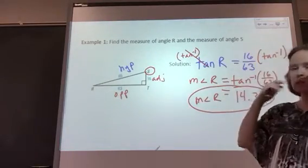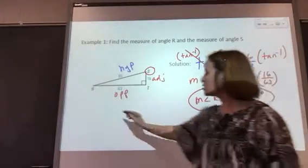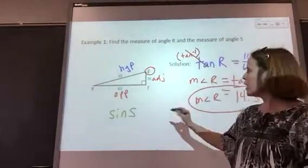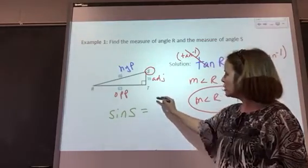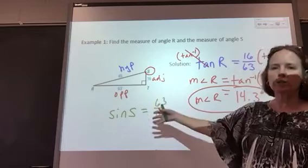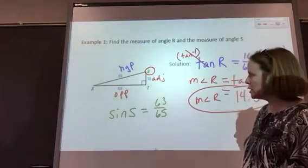Let's use the sine this time to solve for the measure of angle S. Just setting up our ratio, the sine of S would equal the opposite leg over the hypotenuse. We want to undo that and actually find the angle measure.